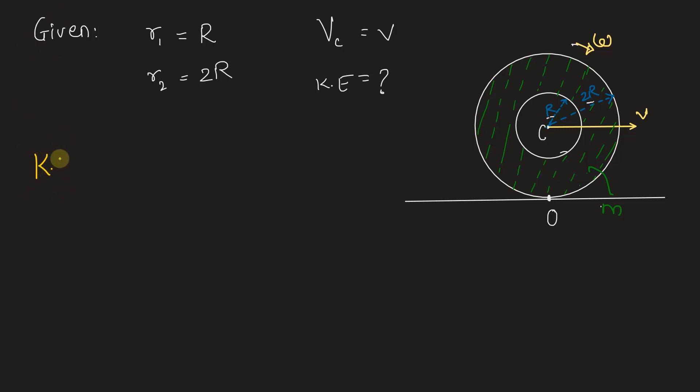Kinetic energy for rolling disc can be given as half into its mass moment of inertia I into square of its angular velocity omega. So, I omega square by 2. This gives us the kinetic energy of the rolling disc.